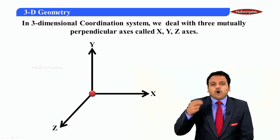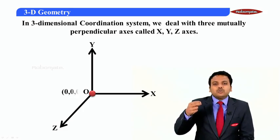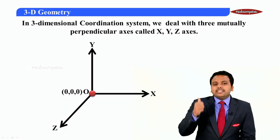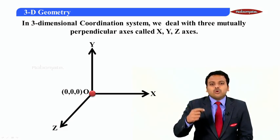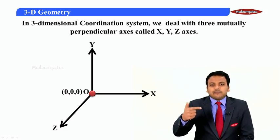What is our origin in 2D? Origin in 2D is (0, 0). In 3D, it is (0, 0, 0) — we add one extra zero.